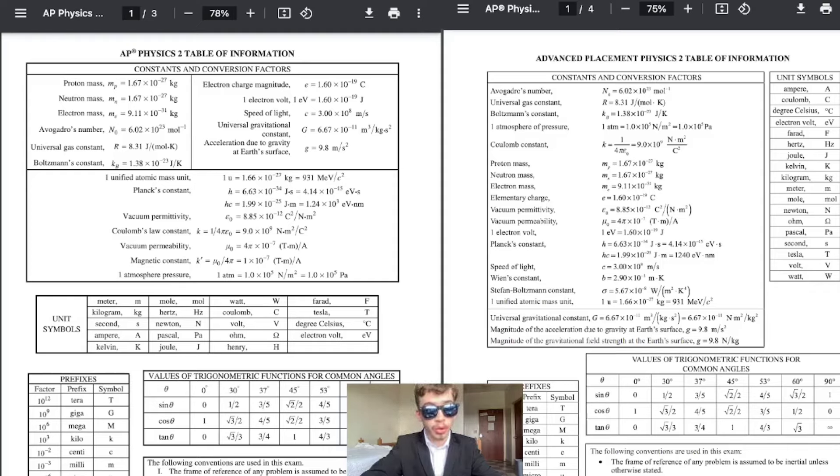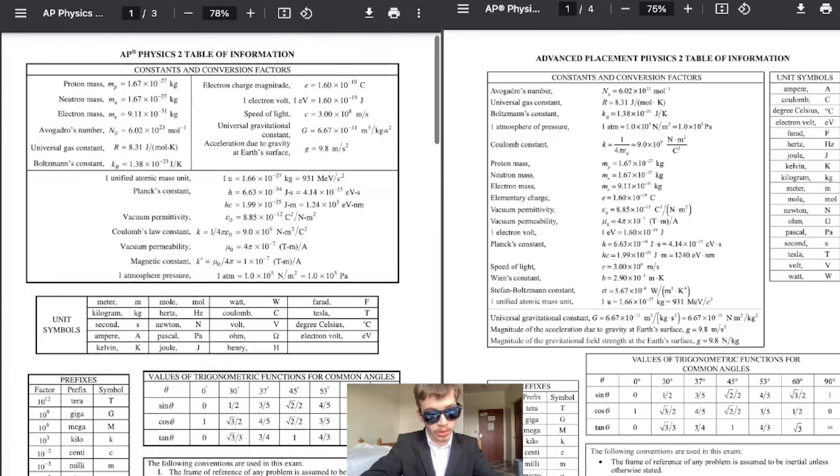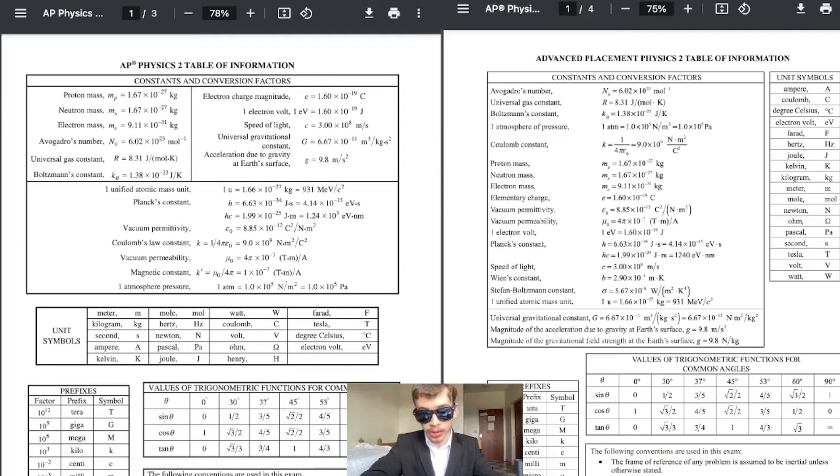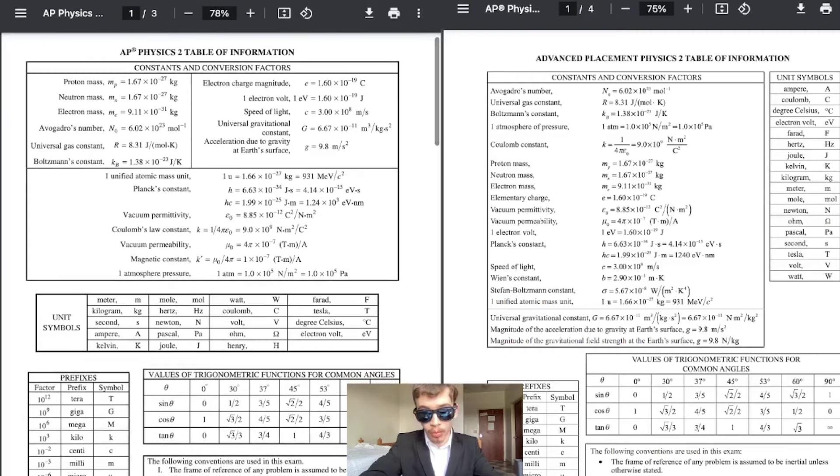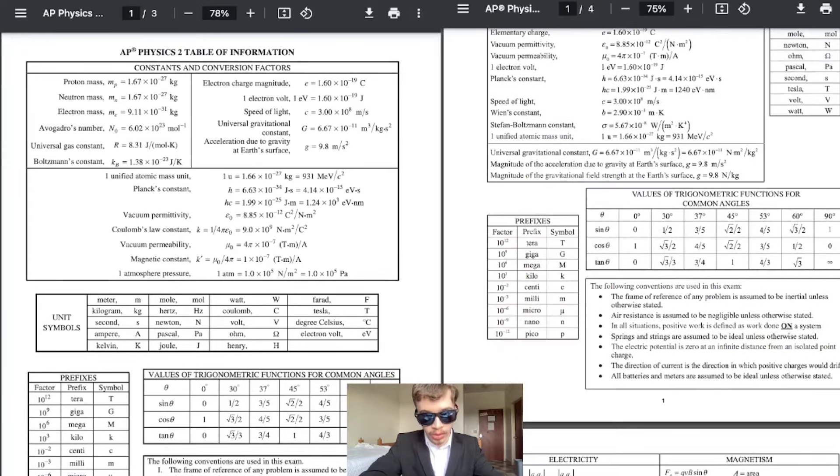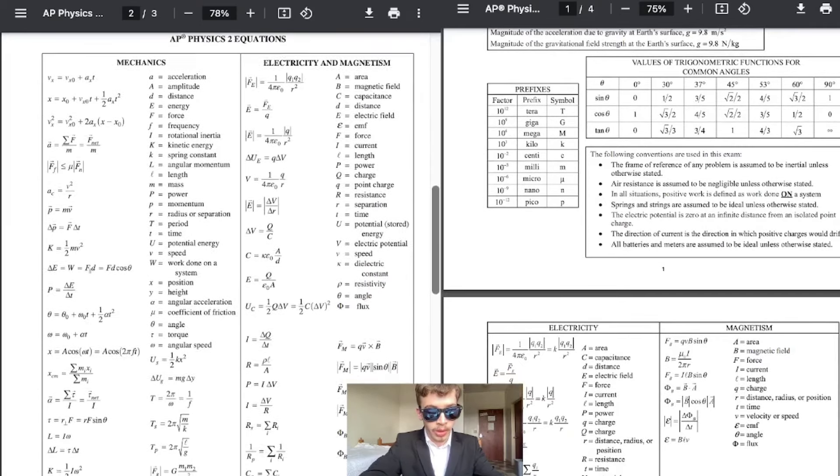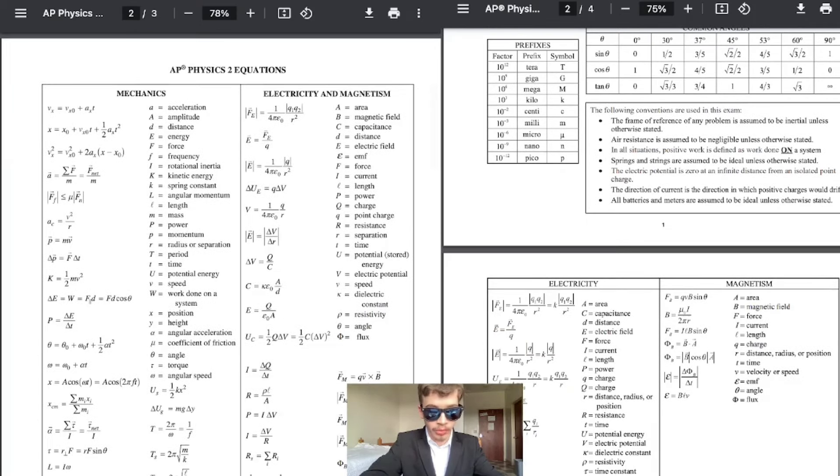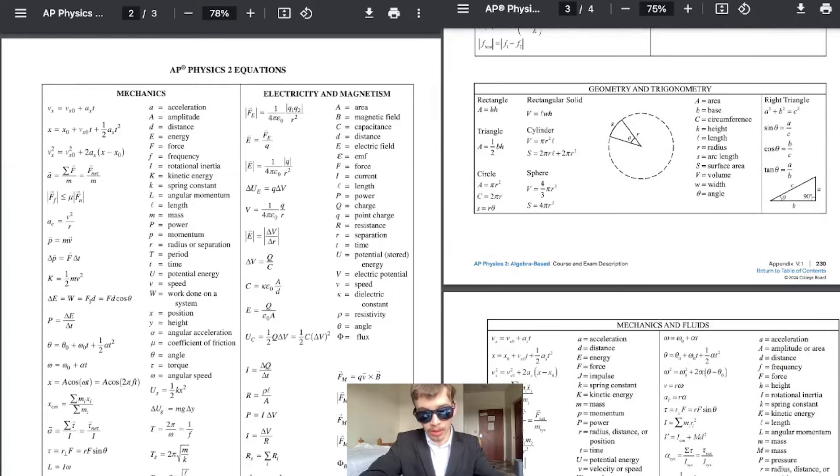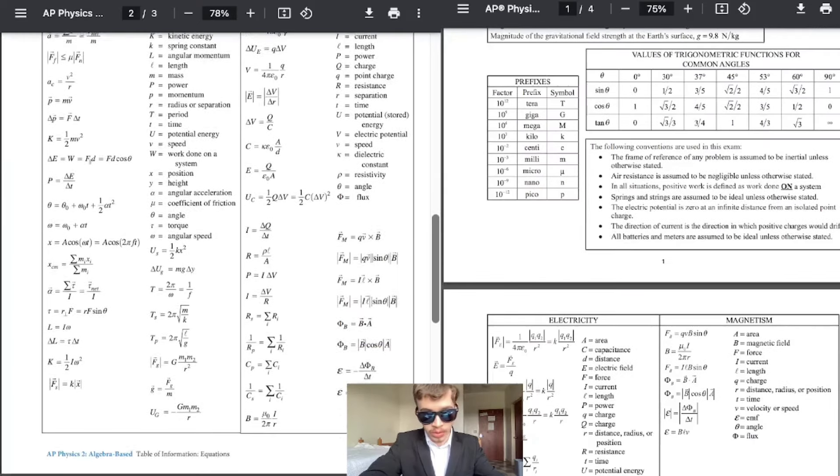Now to compare the AP physics two old and new formula sheet there is an increase of one more page of formulas. And based on the starting with constants and conversion factors there are more constants introduced in AP physics two now. As you can see at the bottom we have Wien's constant, Stefan Boltzmann constant as well as others. It's overall more packed, it is more organized and we still got the prefixes and still the conventions that should be followed.